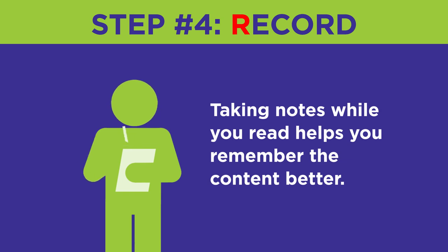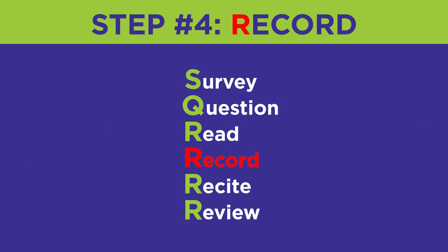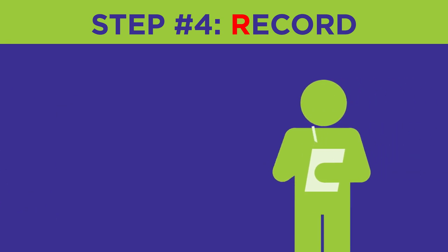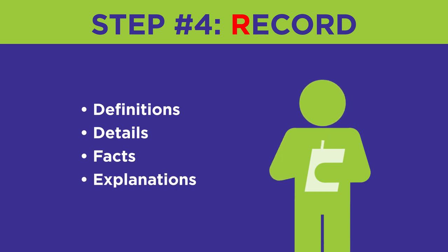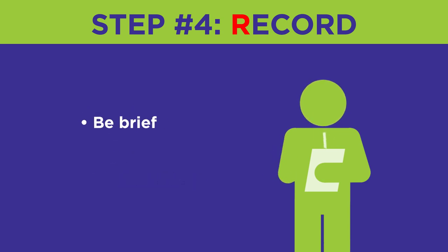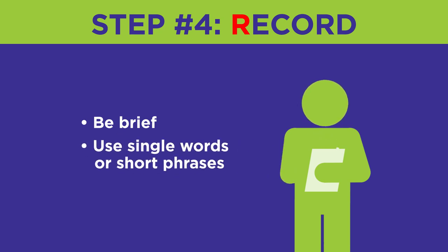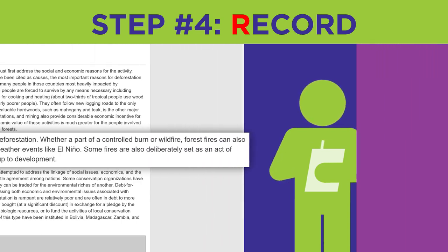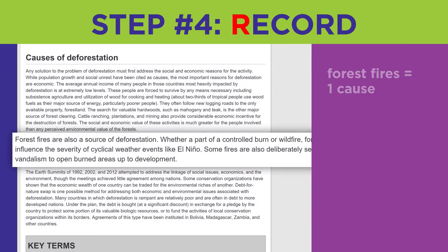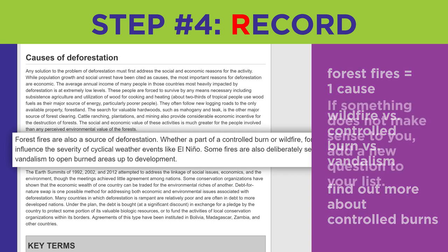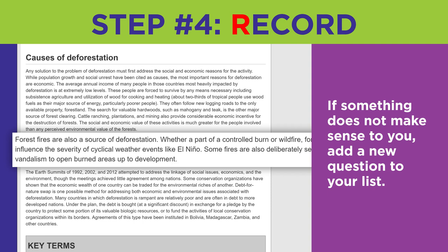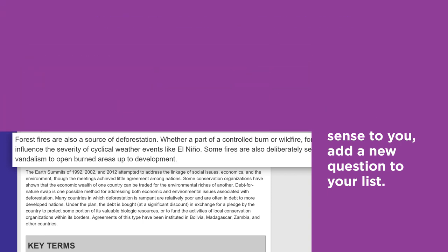Studies show that taking notes while you read helps you remember the content better. That's why record is the next step in the SQ4R method. As you read, write down or record definitions, details, facts, and explanations of concepts mentioned. Be as brief as possible — use single words or short phrases in place of sentences when it makes sense. Going back to the paragraph about forest fires, you might take these notes: Forest fires equals one cause. Wildfire versus controlled burn versus vandalism. Find out more about controlled burns. If something does not make sense to you, add a new question to your list.